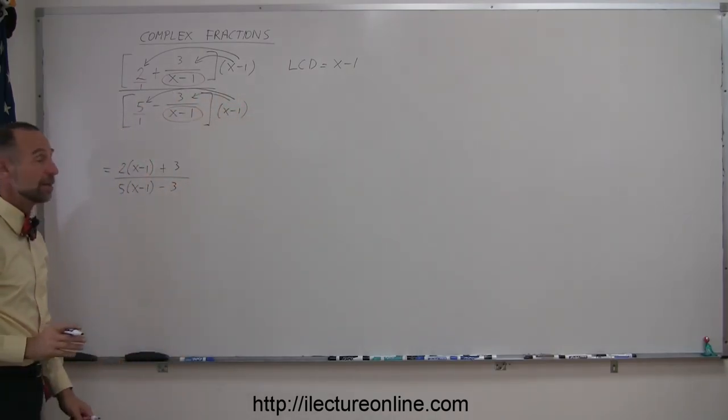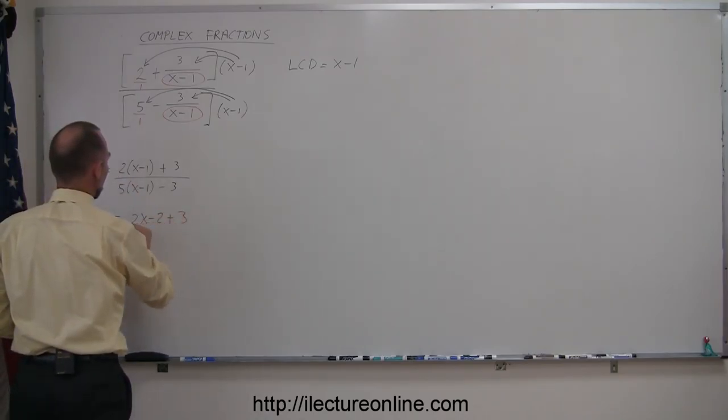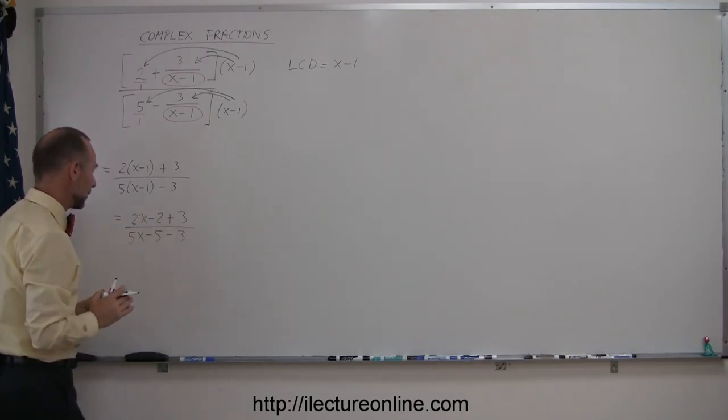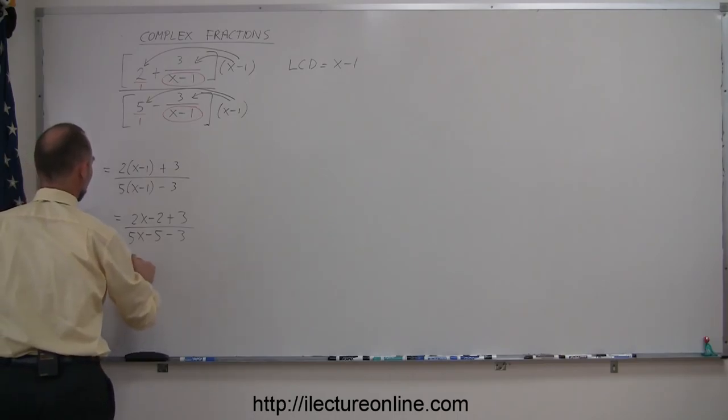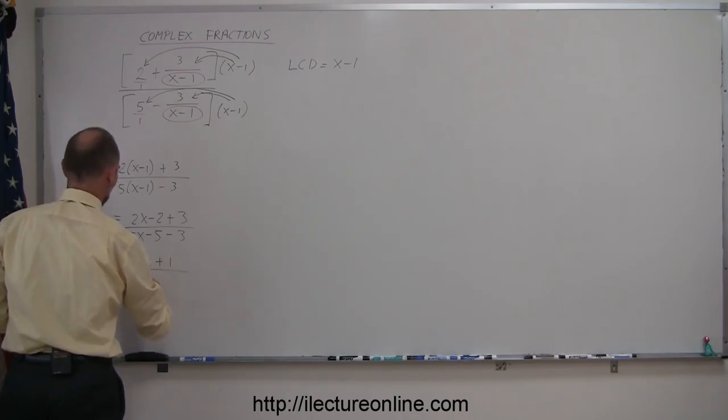Then I get rid of the parentheses, so this is equal to 2x minus 2 plus 3, and this is 5x minus 5 minus 3. Then combining common terms, this becomes 2x plus 1, and this is 5x minus 8.